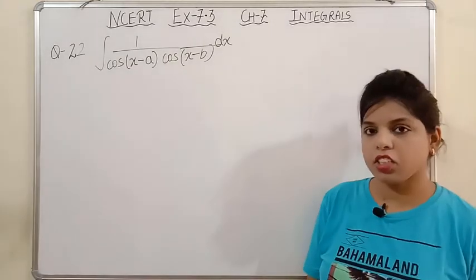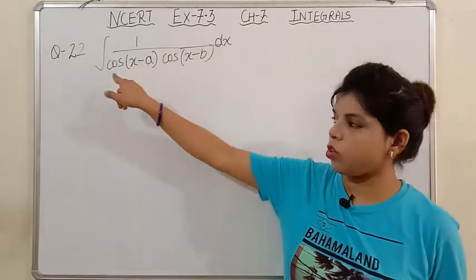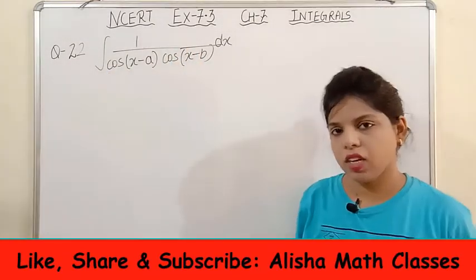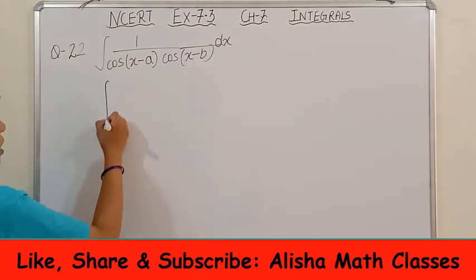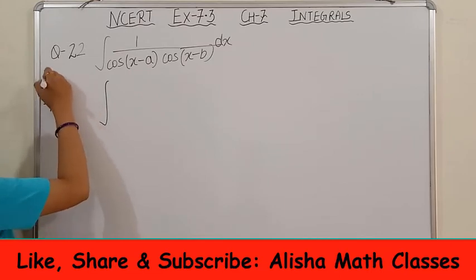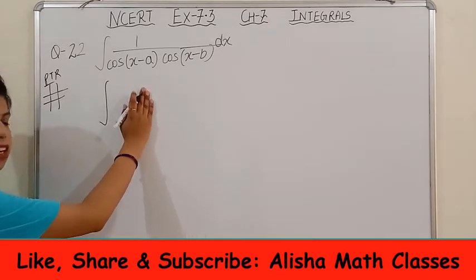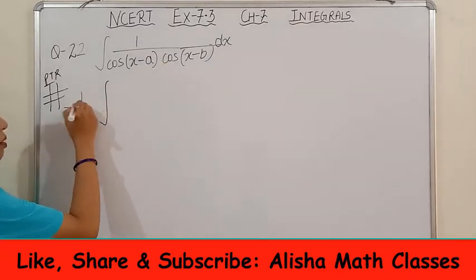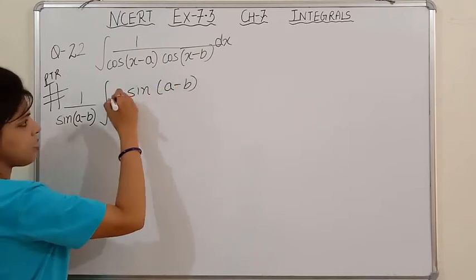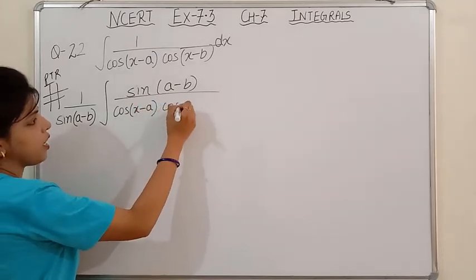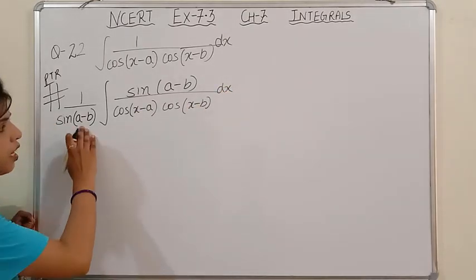Question number 22: integration of 1 upon (cos x - a)(cos x - b). This is a very important question. For such questions involving two cosine factors, we use a specific trick — point to remember: since there is no function-derivative pair, we multiply and divide by sin(a - b), which is a constant (scalar), just like multiplying and dividing by 2.